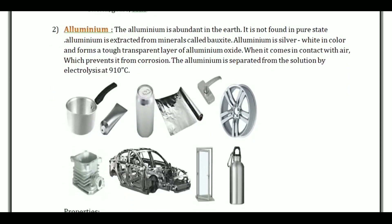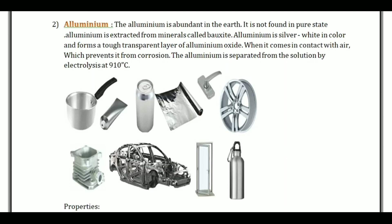Aluminum is abundant in the earth but is not found in pure state. Aluminum is extracted from the mineral called bauxite. Aluminum is silver-white in color and forms a transparent layer of aluminum oxide when it comes in contact with air, which prevents corrosion. Aluminum is separated from the solution by electrolysis at 900-1000 degrees Celsius.